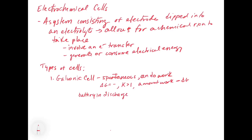A battery in discharge — when you turn your phone on, that electrochemical cell process just happens on its own. The transfer of electrons from the anode to the cathode is what makes the whole phone work. The phone takes the electrical energy coming from the battery and runs. We don't have to do anything to make that happen besides hit the on button, which closes the circuit and allows the electrons to flow.